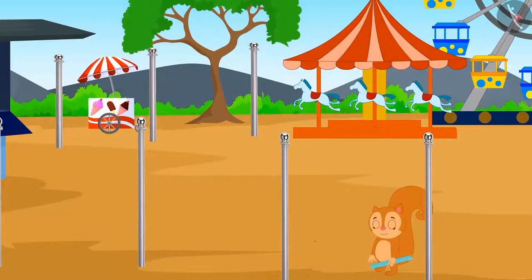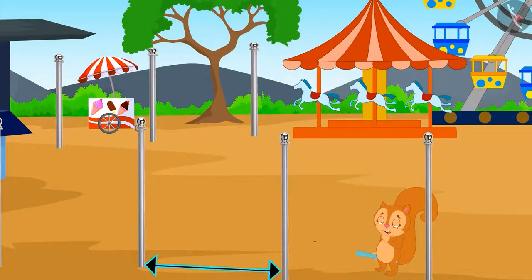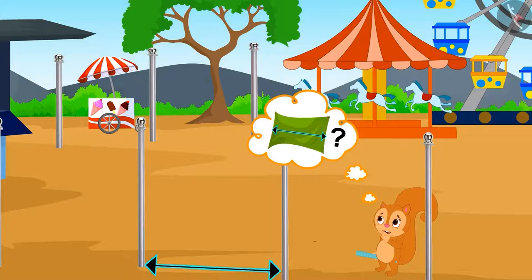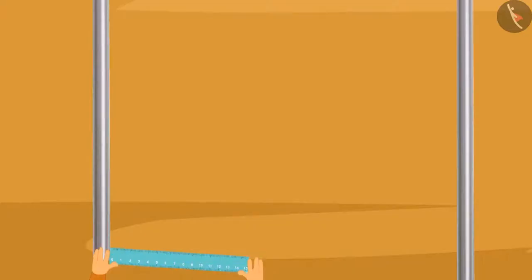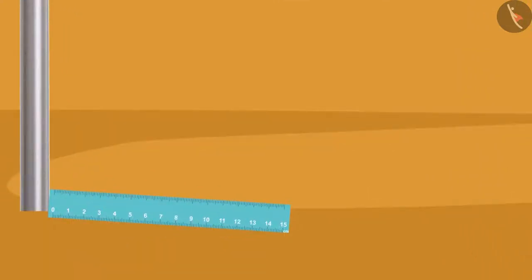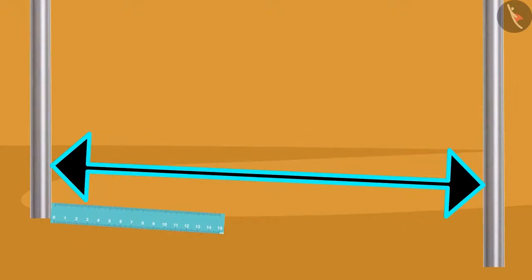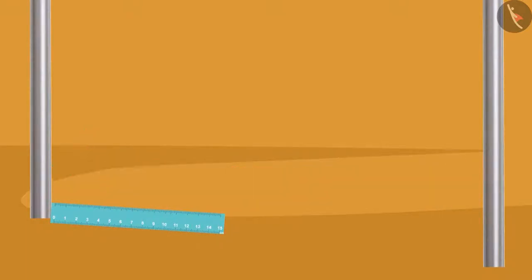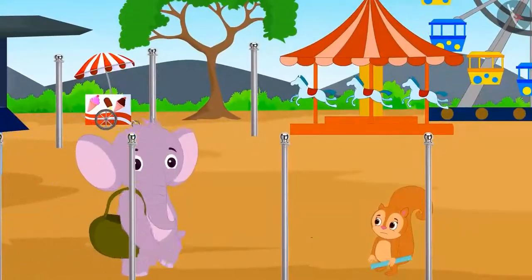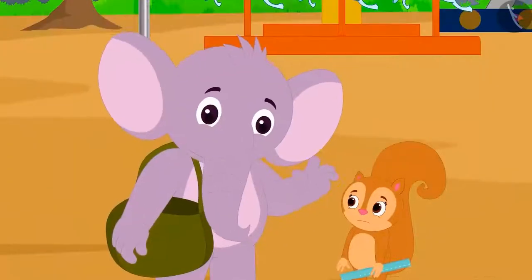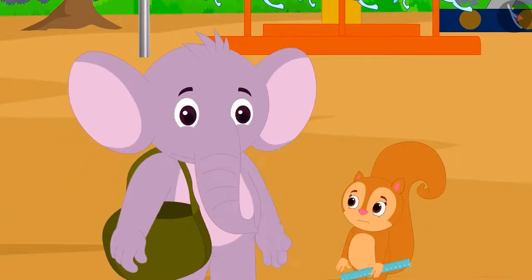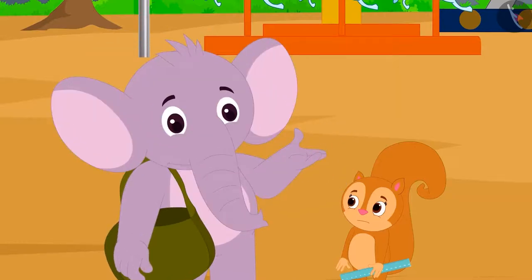She immediately reached the fair taking her 15 centimeter ruler. Poles were erected at the places where curtains were to be hung. Chanda thought that if she measures the distance between the poles she will get the size of the curtain. Chanda began to measure the distance between the poles with her ruler, but her ruler is very small and she is unable to measure the distance.